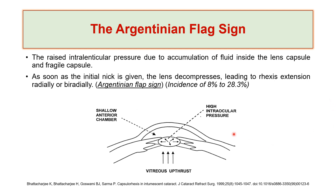Another reason why intumescent cataract is challenging is due to the Argentinian flag sign, a well-known described complication. The mechanism is due to raised intralenticular pressure — this accumulated fluid inside the lens capsule raises the intralenticular pressure. There is also a fragile capsule, as most patients are older and due to the aging process their capsule is fragile.